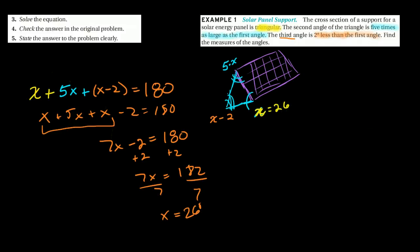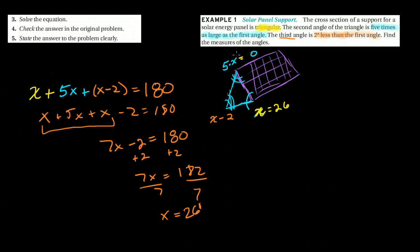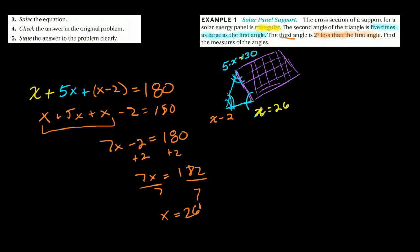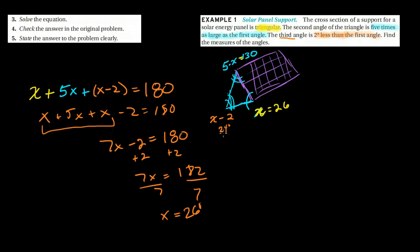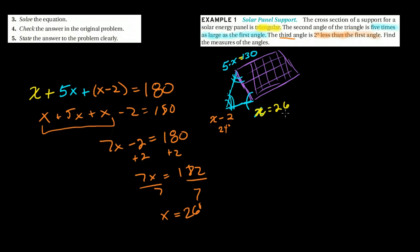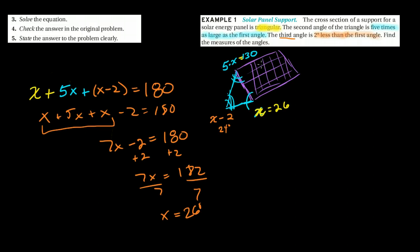So I know that this angle is 26. I know that this angle is 5 times 26, so 5 times 26 is 30, carry the 3, 130 degrees. And I know that the orange angle is 26 minus 2. It is 24 degrees. So we now need to check our answer. So 24 plus 26 is 50. 50 plus 130 is 180. So it works.